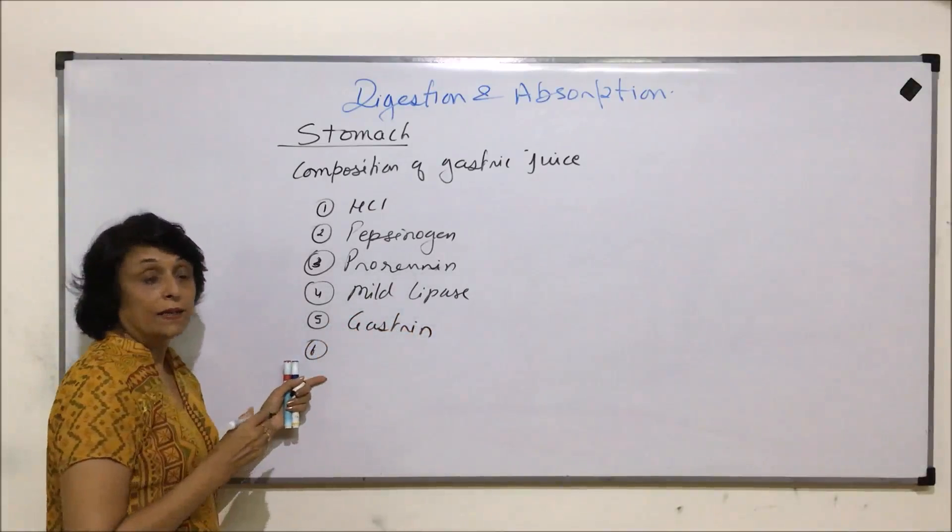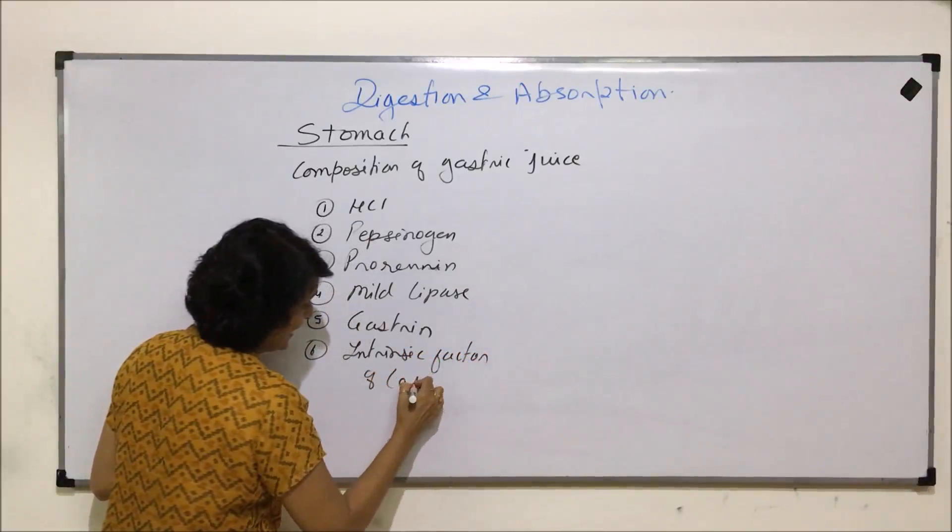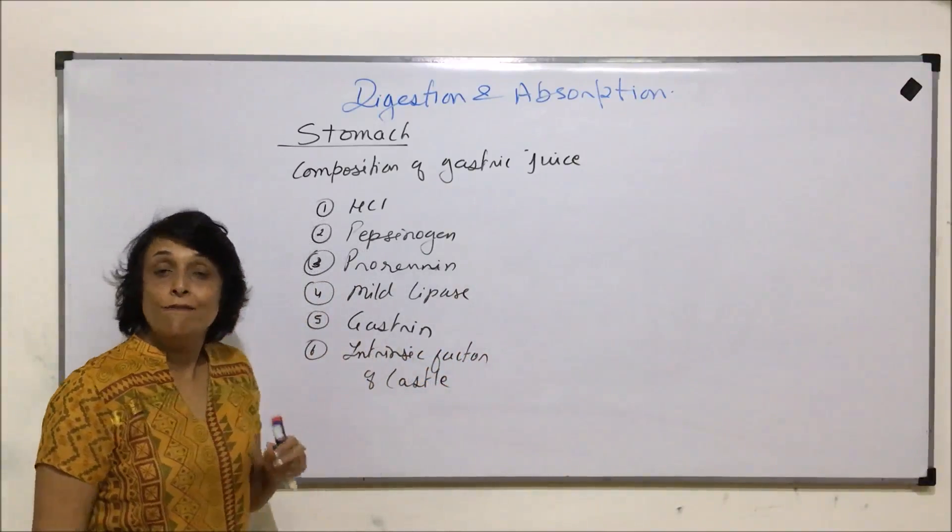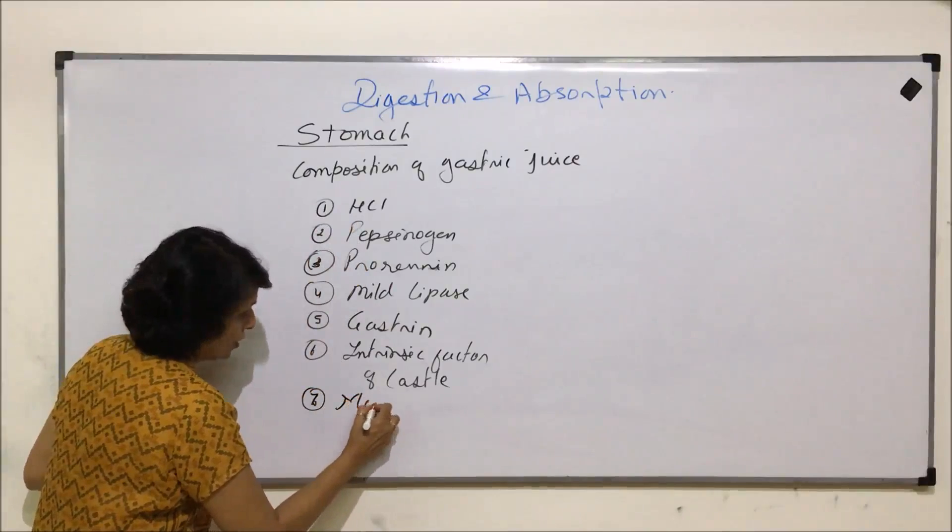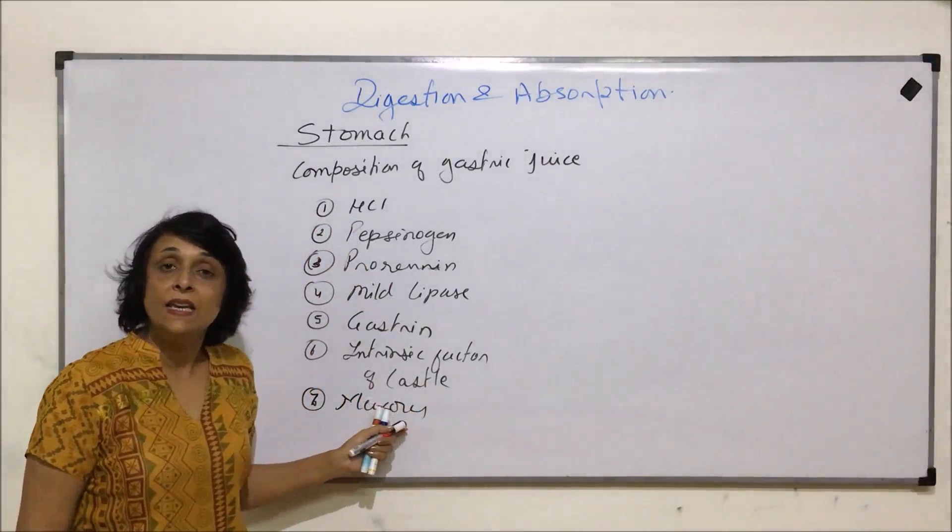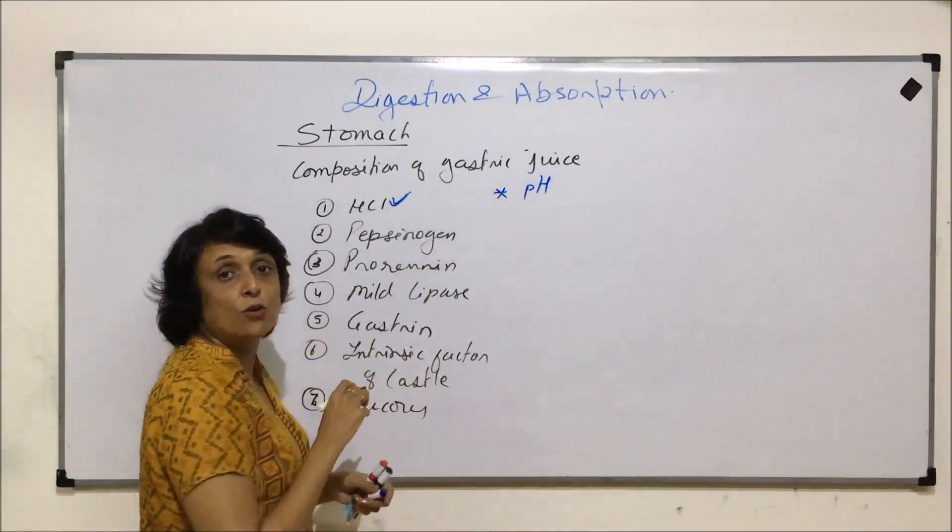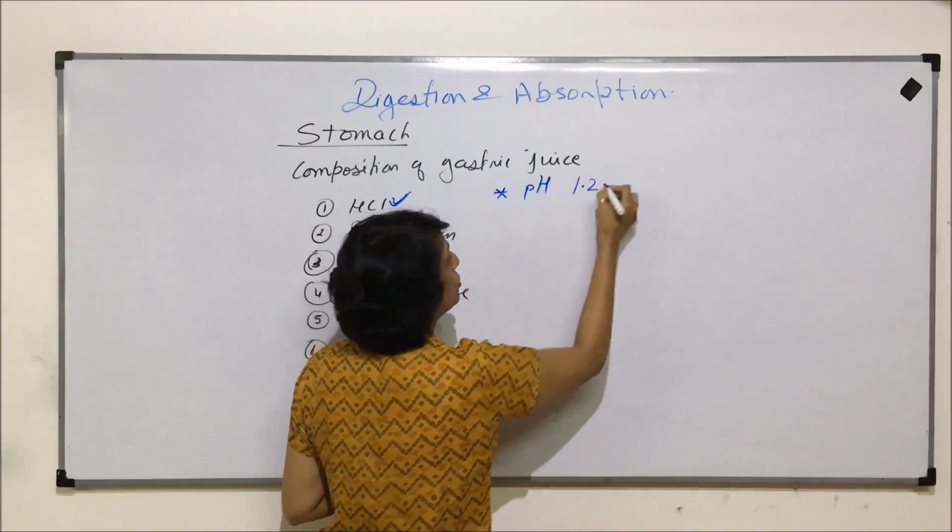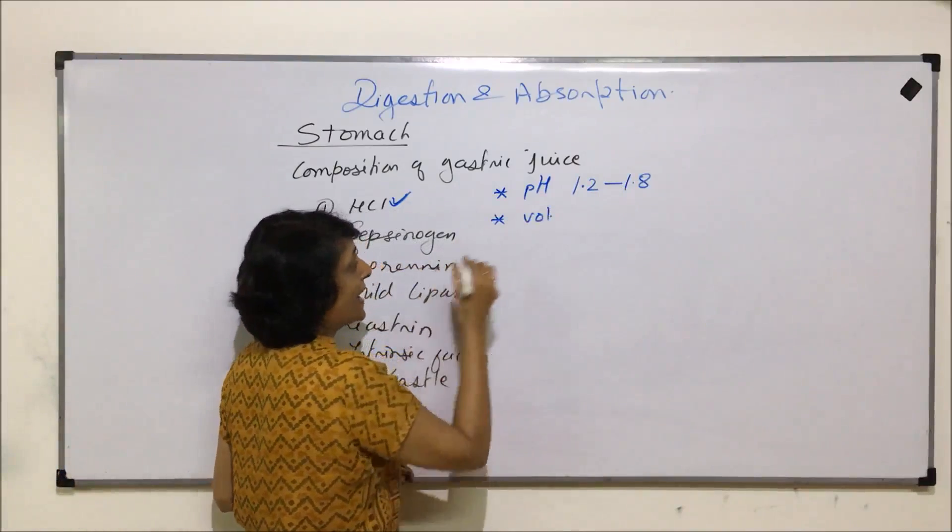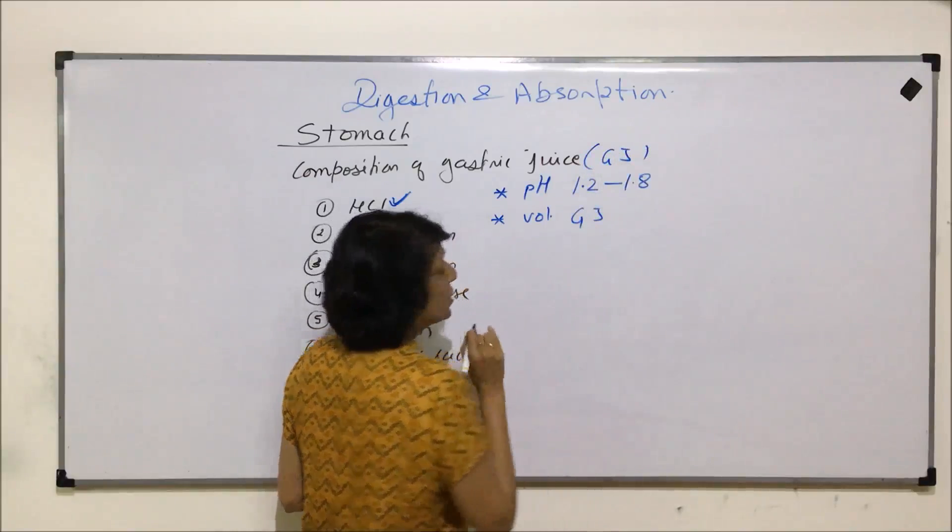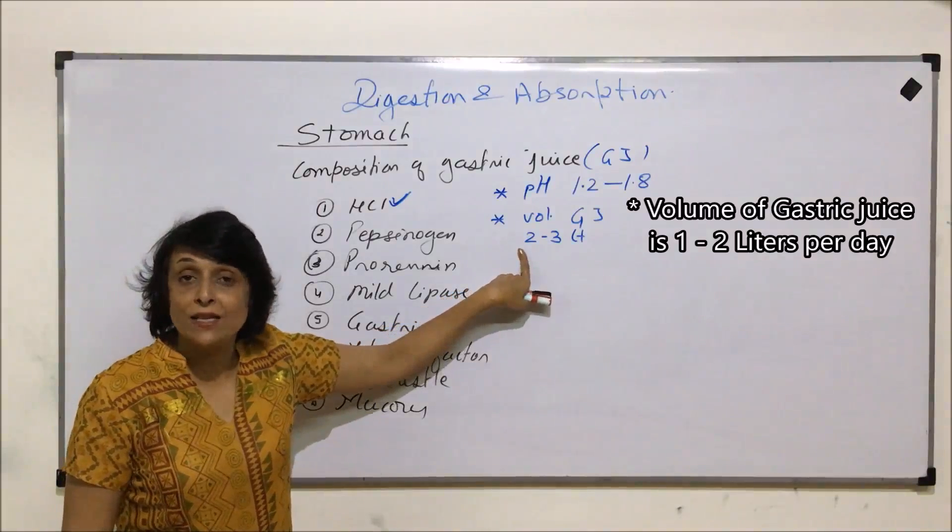Then the secretion of G cell that is gastrin. It also has the intrinsic factor of castle. So there are enzymes, there is hydrochloric acid and there is mucus. The pH of gastric juice is highly acidic because of this hydrochloric acid. It ranges from 1.2 to 1.8. That means it is a very acidic pH. Volume of gastric juice per day is about 2 to 3 liters.